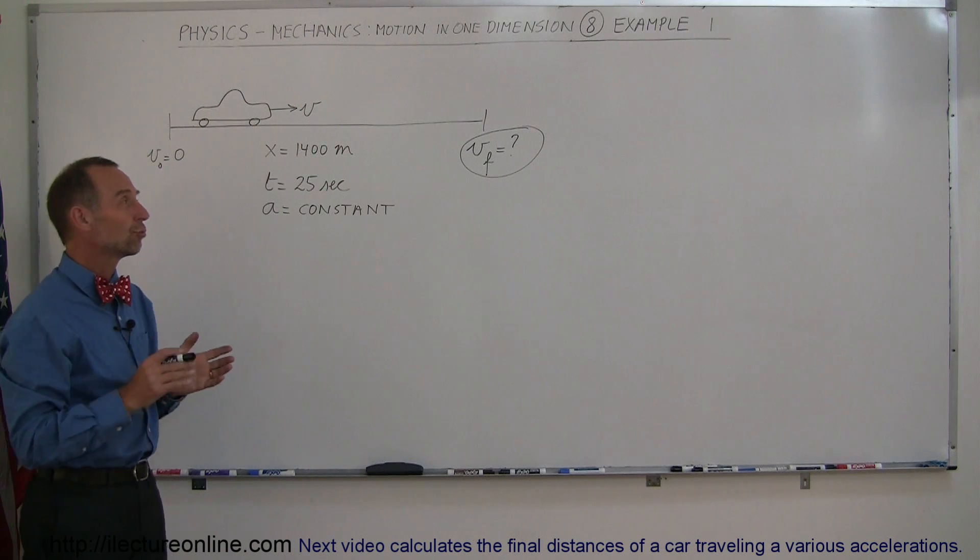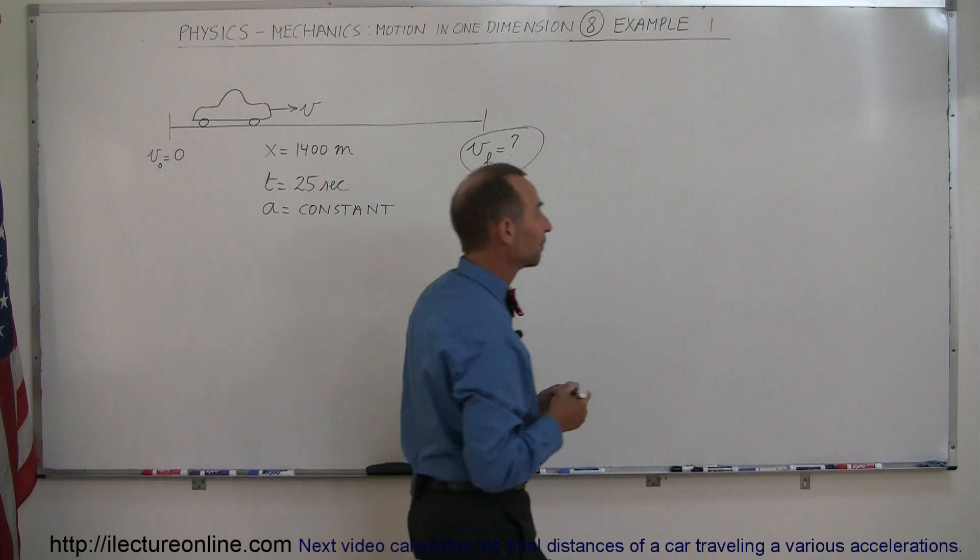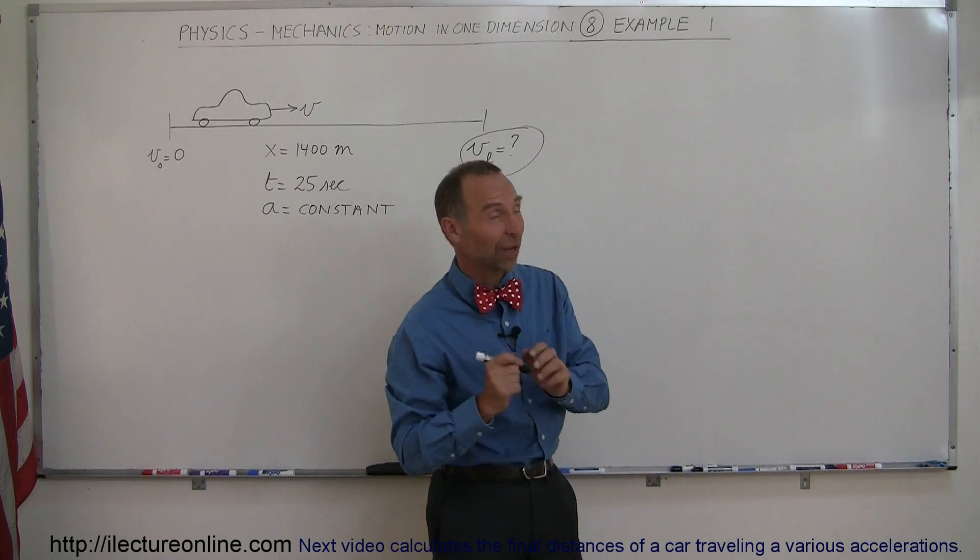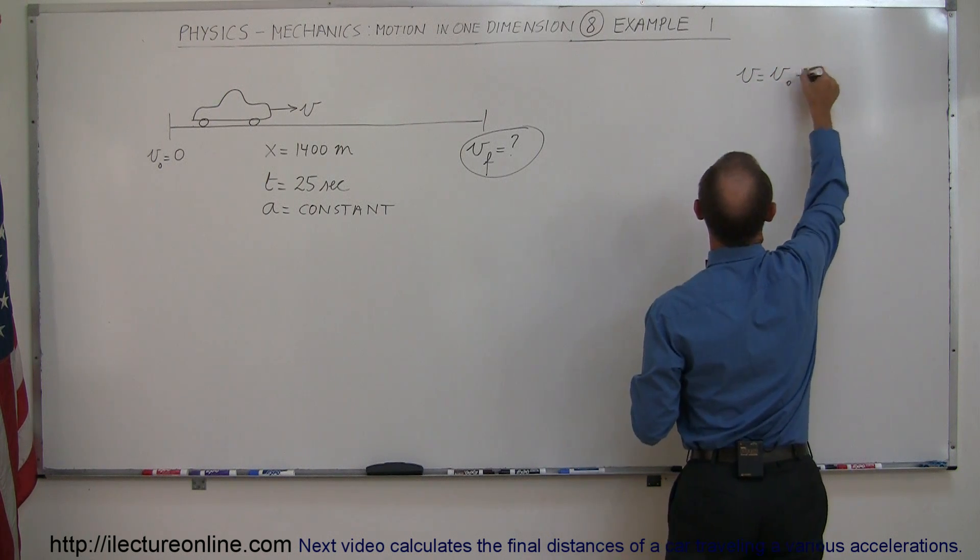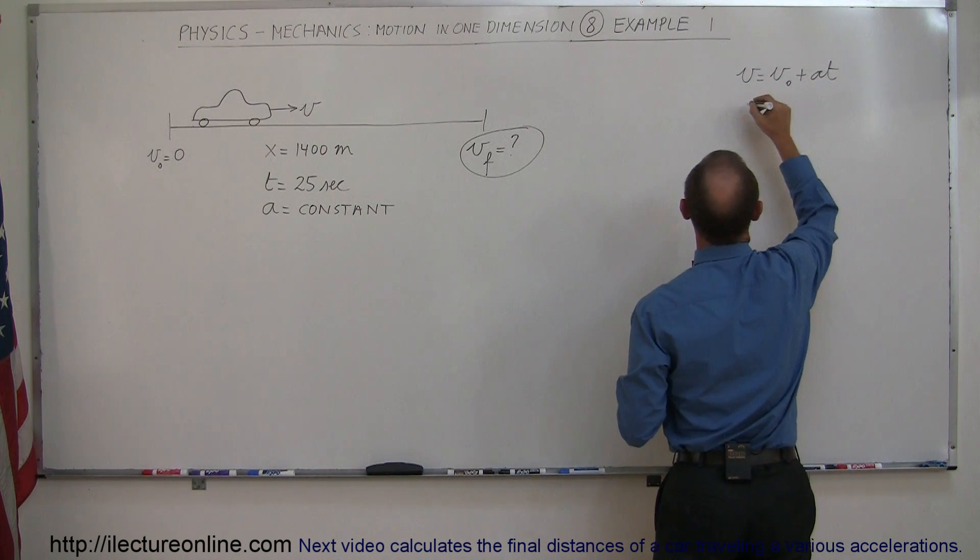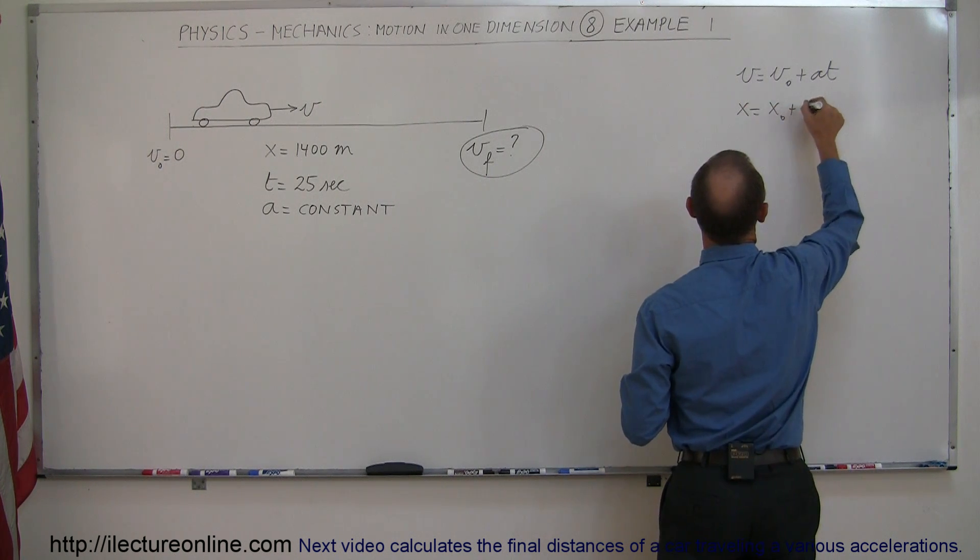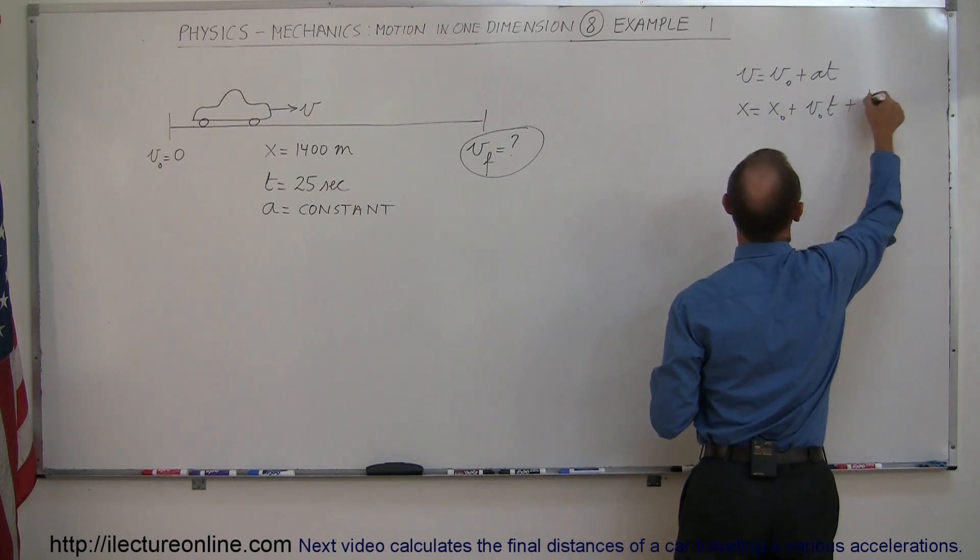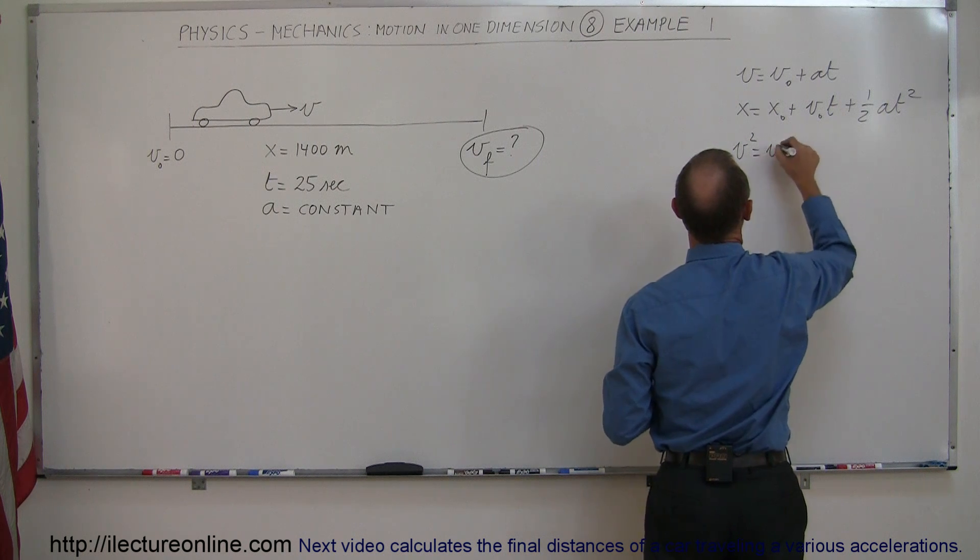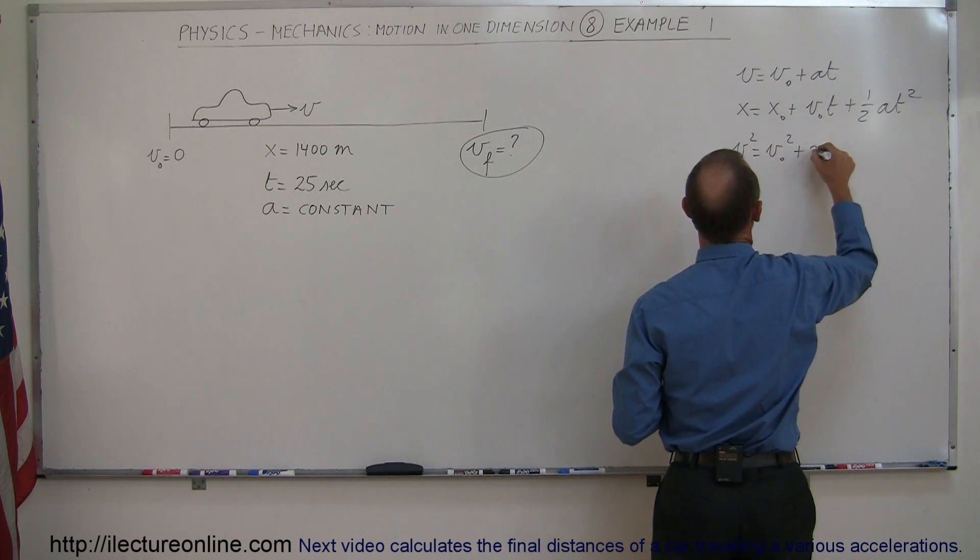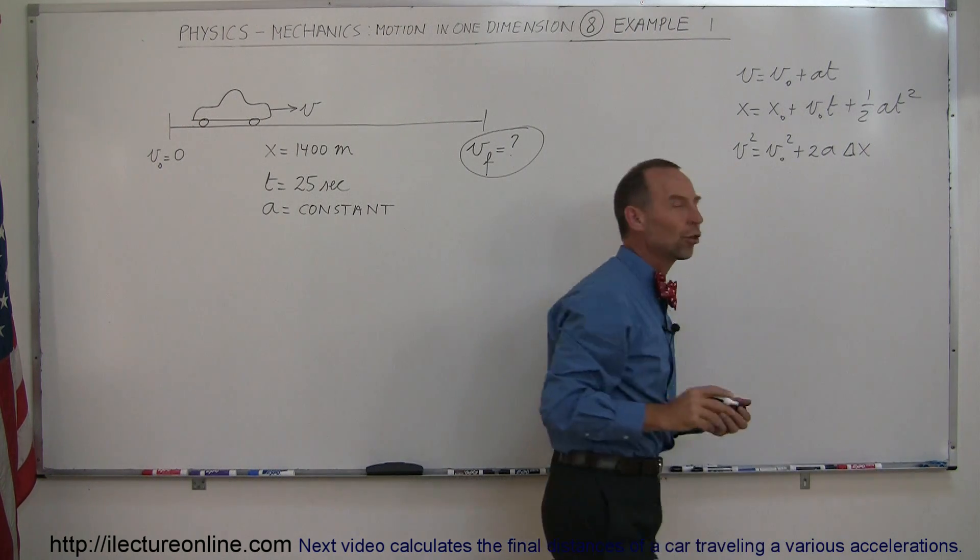The first thing you want to do is draw or write down your three equations of kinematics. So let's do that. You should memorize those three equations. First equation: V equals V sub-naught plus AT. Second equation: X equals X sub-naught plus V sub-naught T plus one-half AT squared. Third equation: V squared equals V sub-naught squared plus 2A times delta X. These are the three equations.